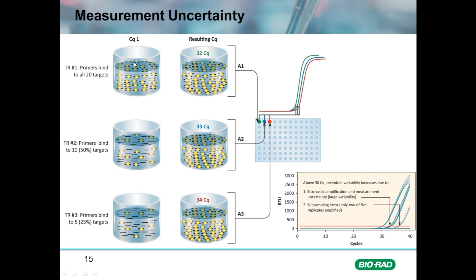This is measurement uncertainty. If all target molecules amplify in cycle one in a technical replicate, there will be a lower CQ than if fewer target molecules amplify, shifting the CQ values higher. In qPCR, the only way to circumvent this problem is to use more technical replicates when the CQ values are above 29 to 30 cycles, and then take the average CQ value of those replicates.